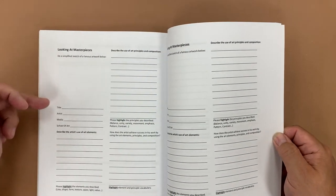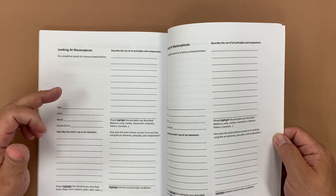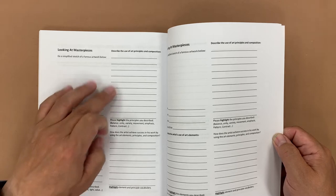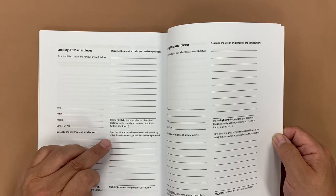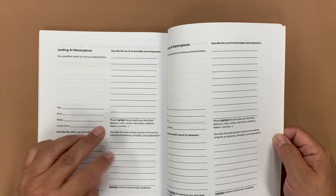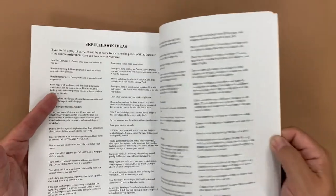Here we can look at masterpieces, describe them, and then using the principles of composition and the art elements to kind of describe where they see that. And then how does the artist achieve success in his work by using the elements and principles. So we have some worksheets like that available for students to analyze their work.